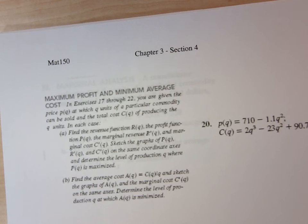This says, in exercises 17 through 22, you are given the price P(Q) at which Q units of a particular commodity can be sold, and the total cost C(Q) of producing the Q units in each case.